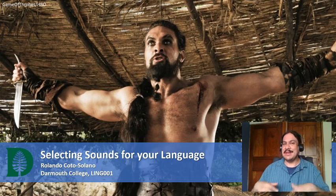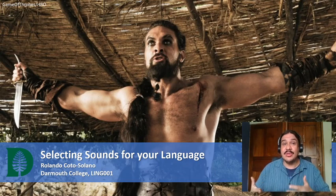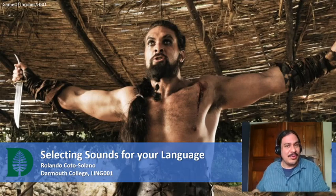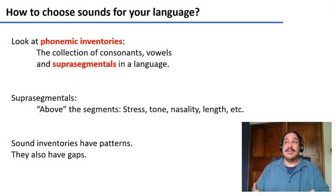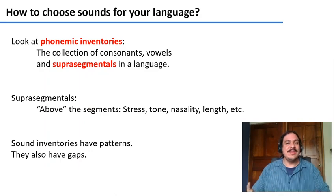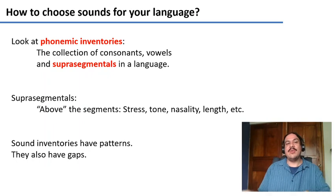We have looked at the sounds of many languages in the world and at the IPA table which tells us what sounds are possible for humans. My first piece of advice would be to look at phonemic inventories. These are the collections of consonants, vowels, and supersegmentals in a language.